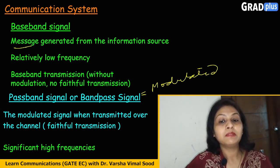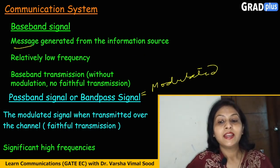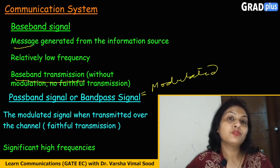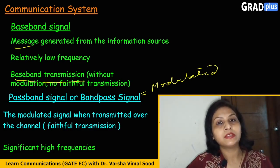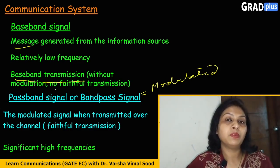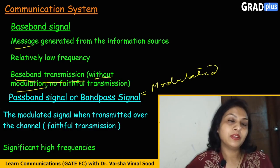The baseband signal is nothing but the message generated from the information source, and they are of relatively lower frequencies. When we send the original message — the baseband message — as such, meaning without modulation, then that transmission is known as baseband transmission. These communication systems operate without modulation.